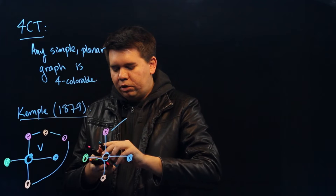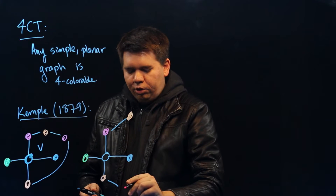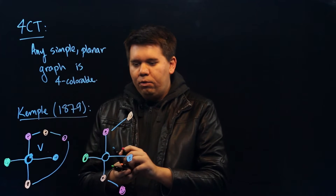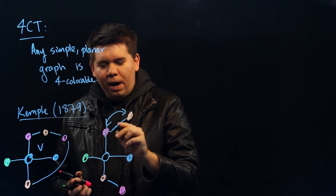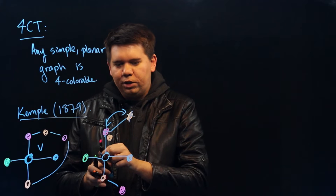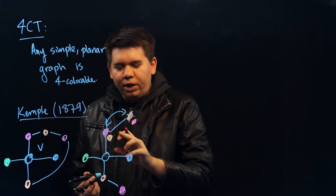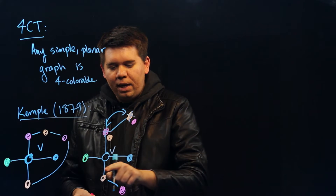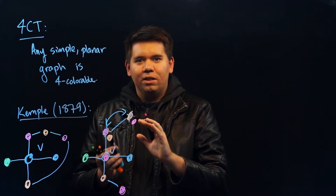If there is no chain connecting the vertex on top to the vertex on bottom via pink-orange vertices — maybe the pink connects with some orange up here, and may connect with some pink down here, but those two never link up — then you're free in one of those chains to simply exchange the pink for the orange. By swapping the colors of pink and orange along the chain, you've now freed up the color pink. The center vertex V no longer borders a pink vertex, so we're free to color V pink, giving us a four-coloring of the graph.